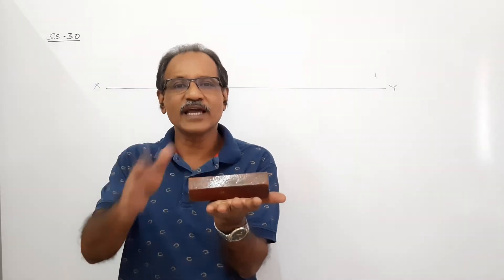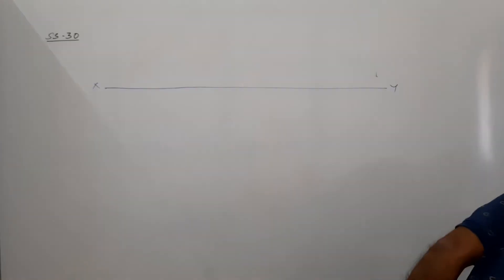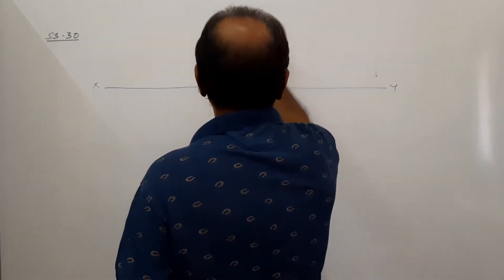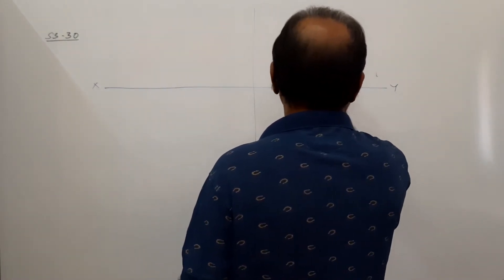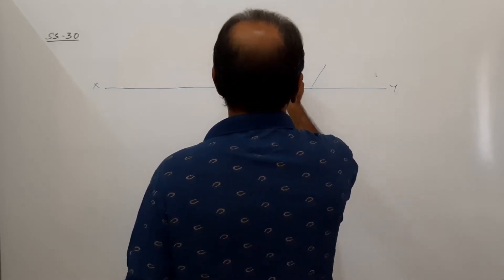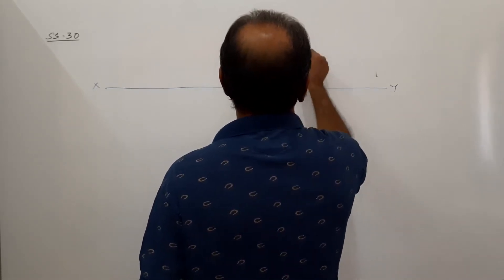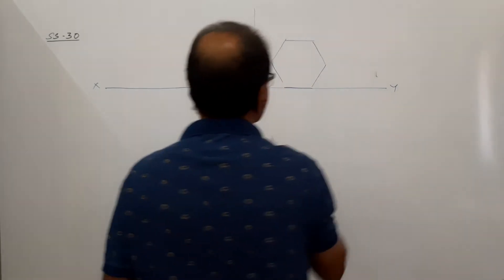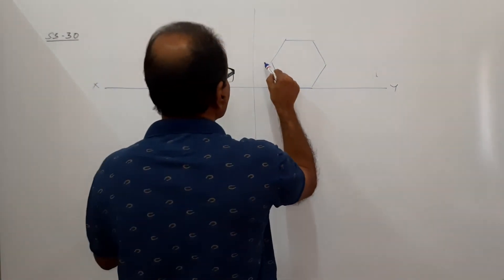So what is end view? End view is a regular hexagon. Draw the end view first. Draw a vertical line. End view first — I name it.